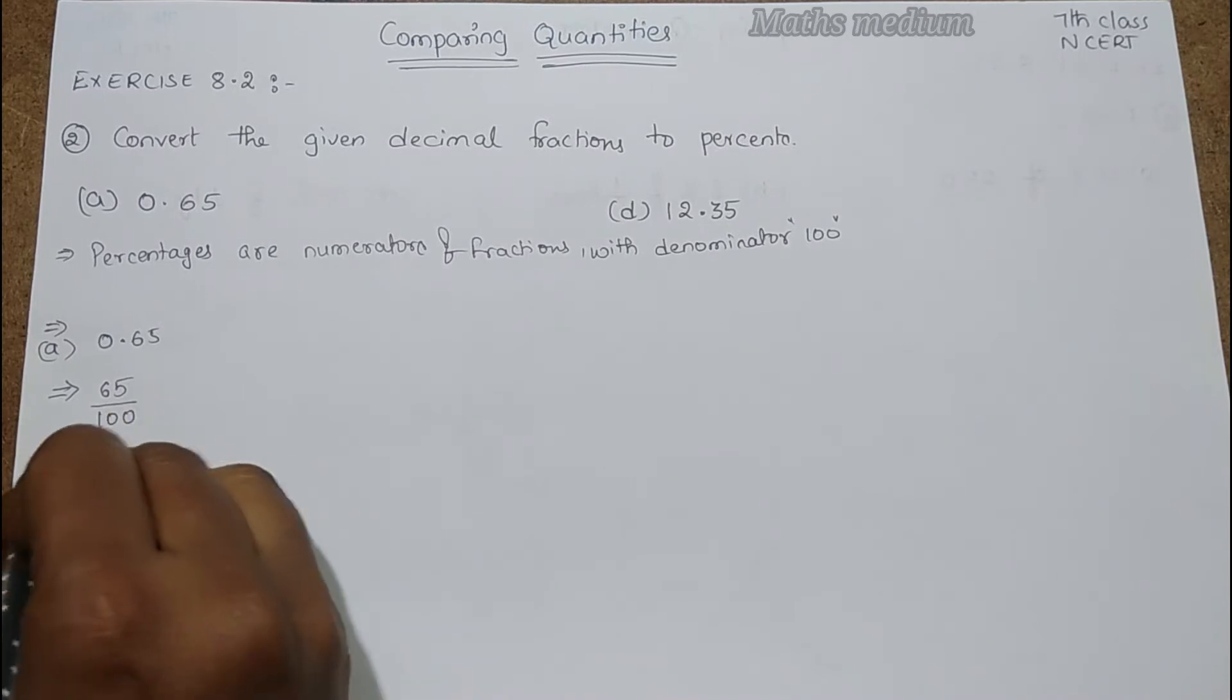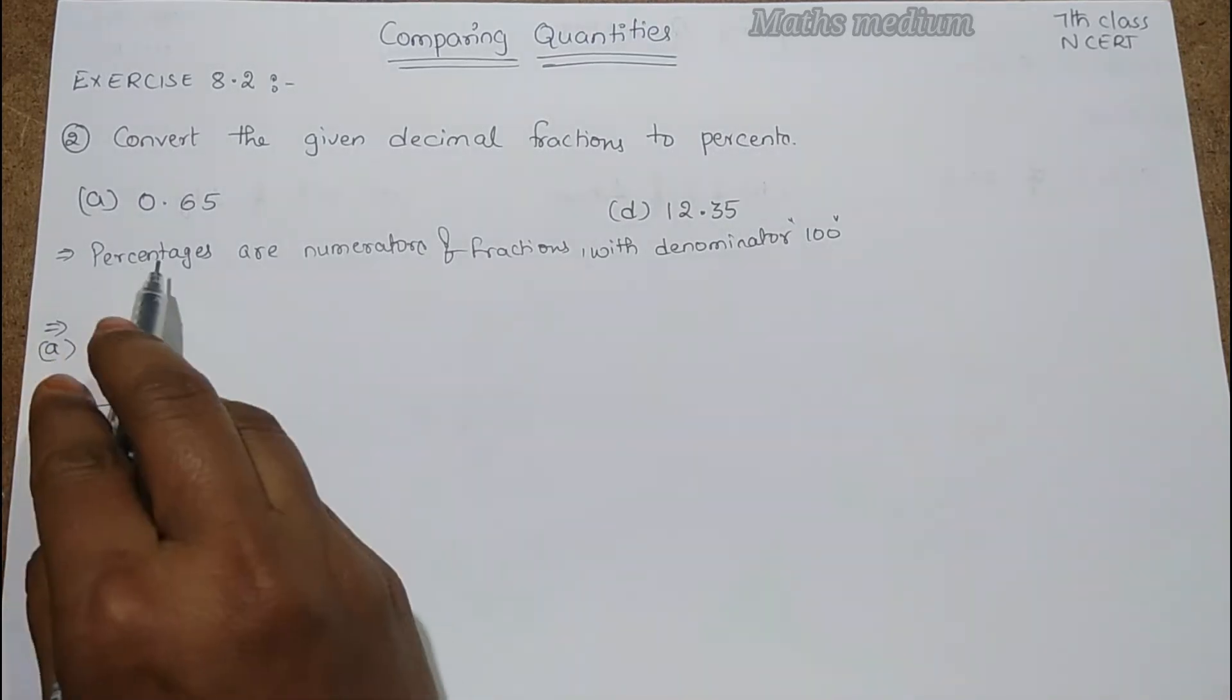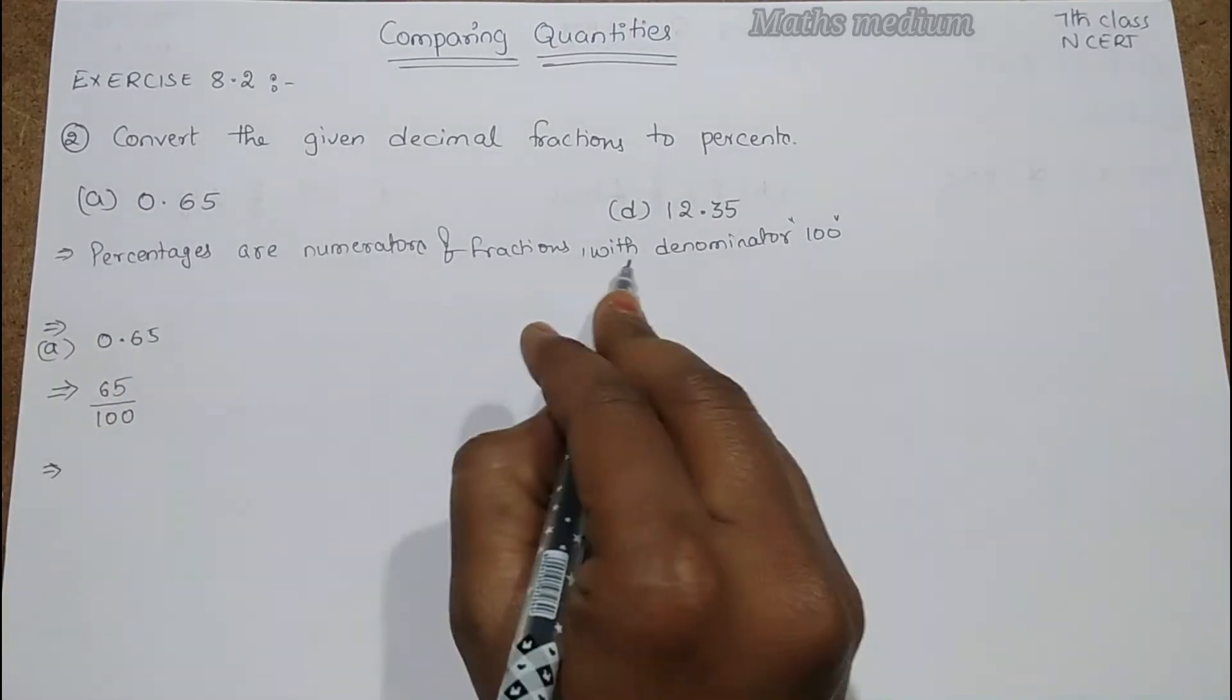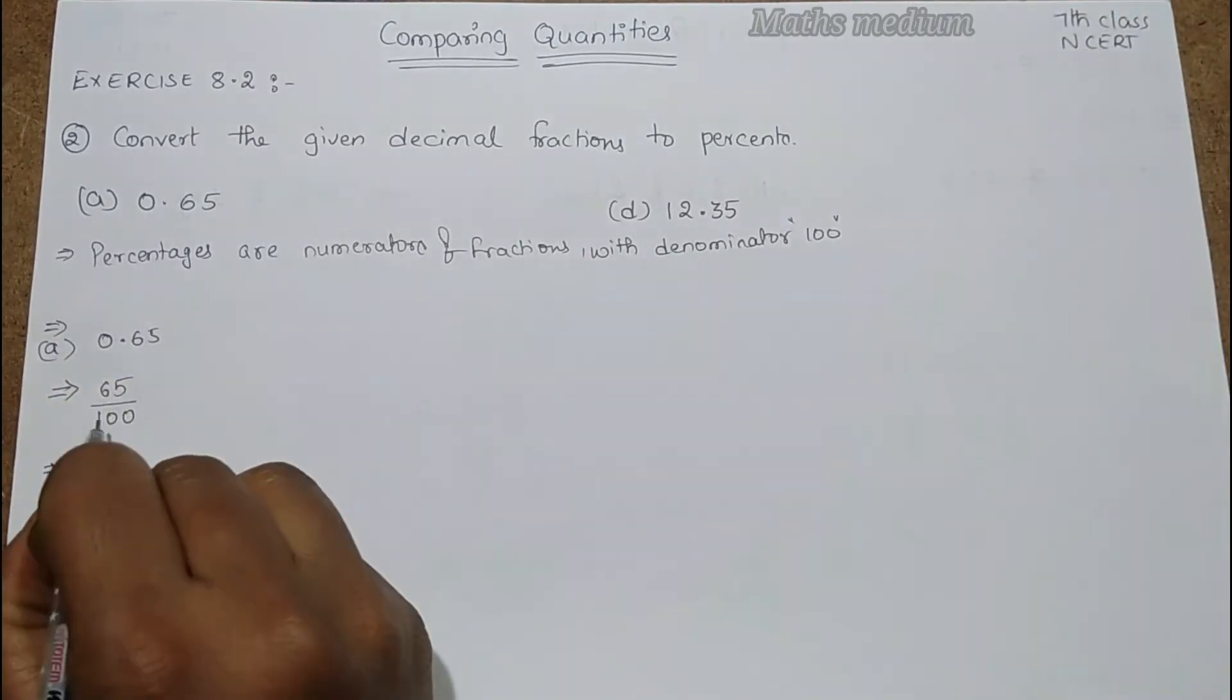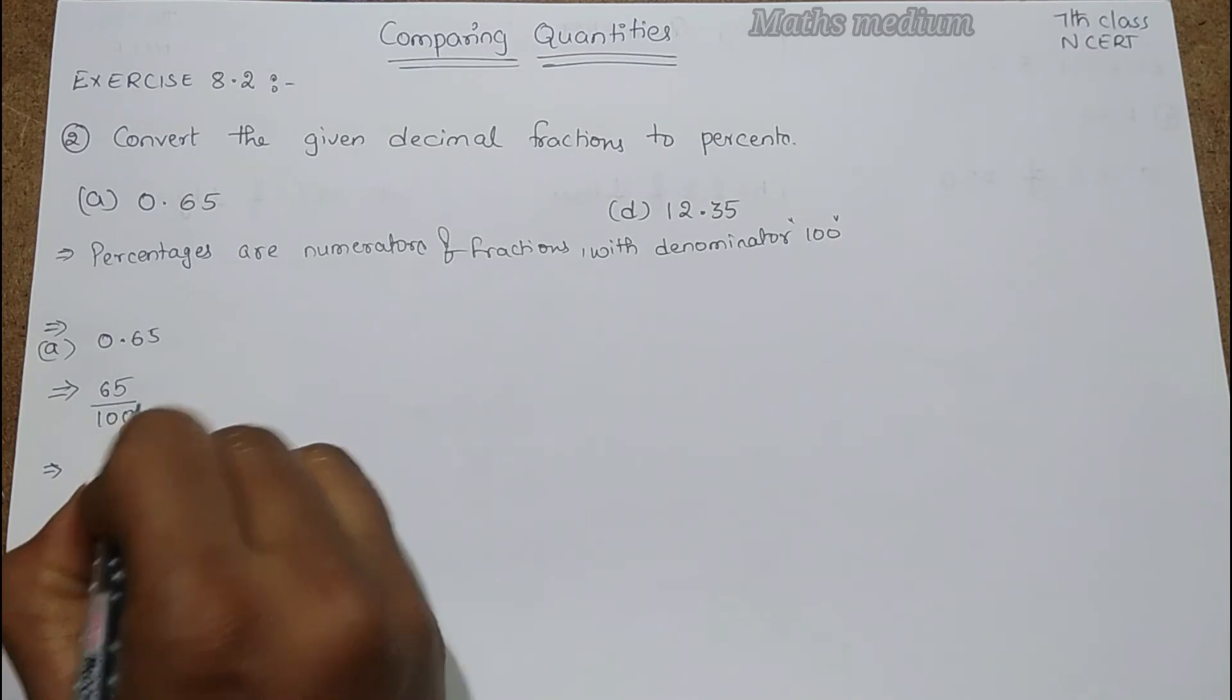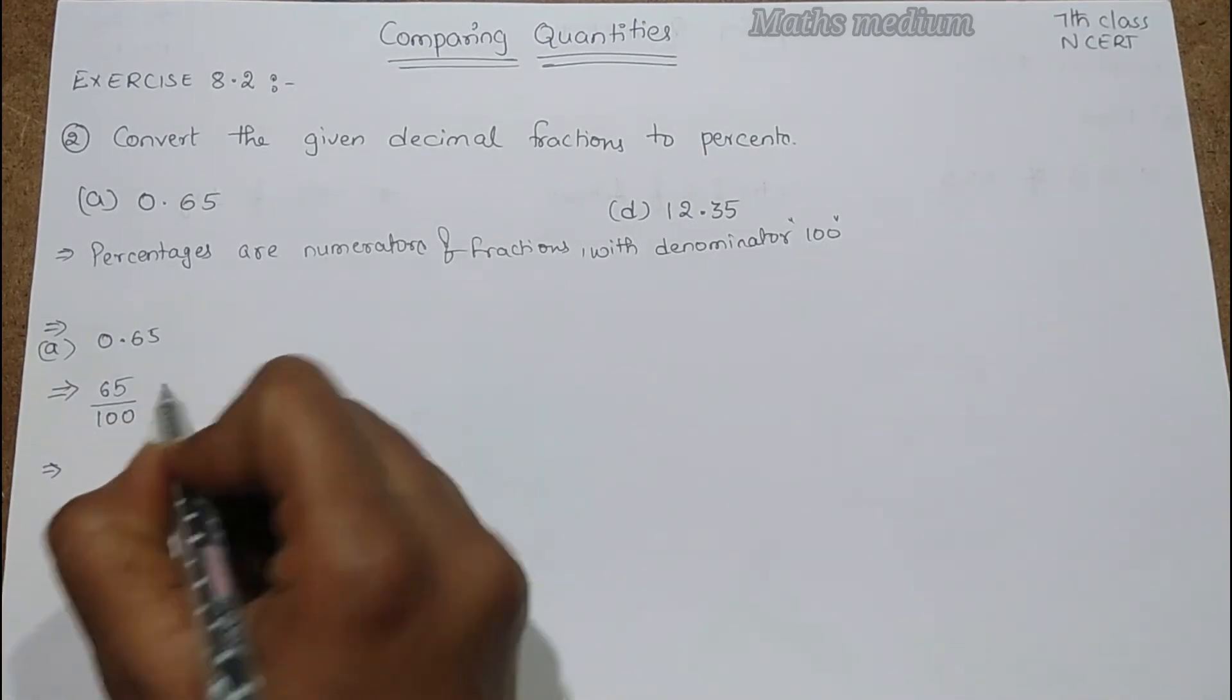So this is the one. Now here percentages are numerators of fractions with the denominator 100. If in case there is no 100 in this denominator we have to multiply both numerator and denominator with 100.